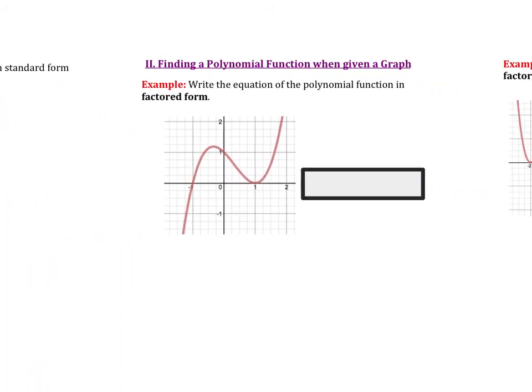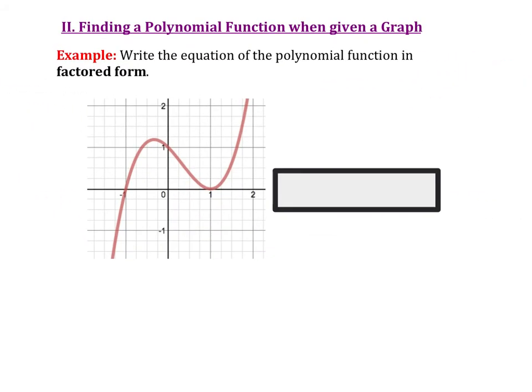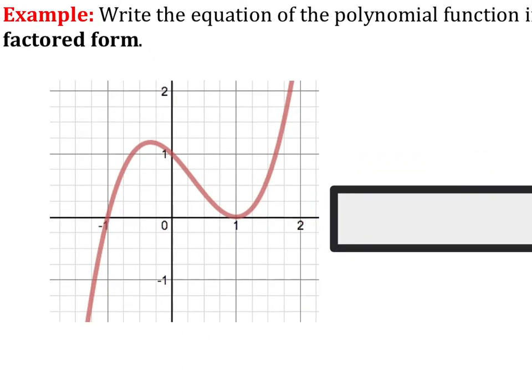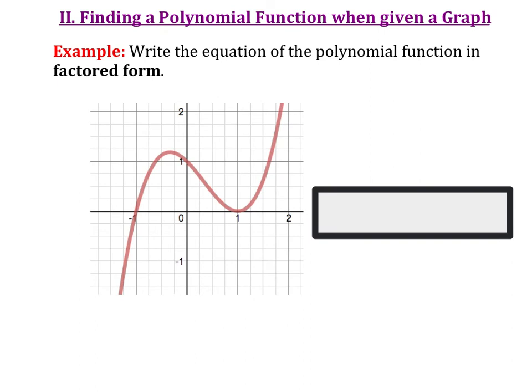What happens, though, if we have a graph? Well, if we have a graph, we just have to look for the x-intercepts, because roots and solutions and x-intercepts are all synonymous — they're all tossed around in the same fashion. So if I look at this graph, I've got some sort of odd degree polynomial. I'm going to make the assumption that it's probably going to be an x to the third polynomial.